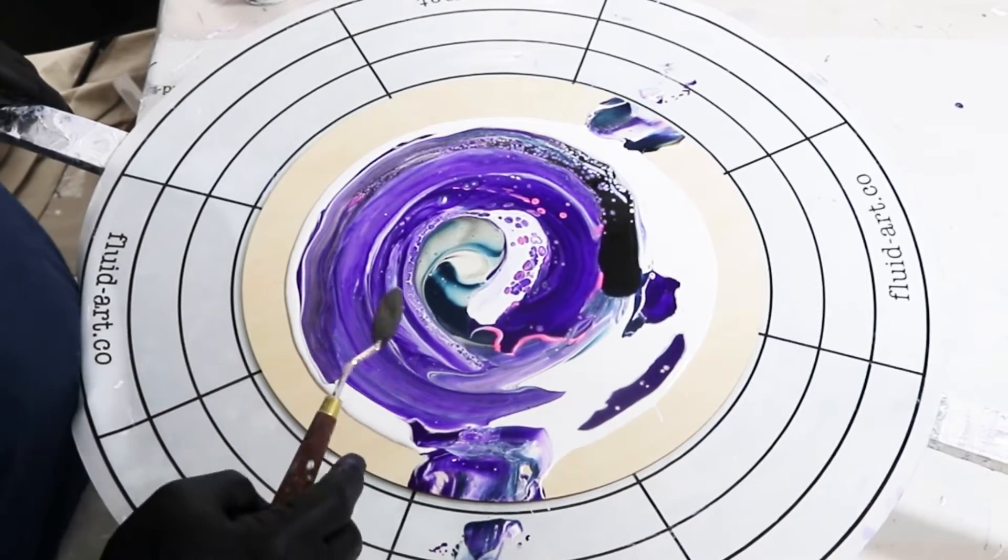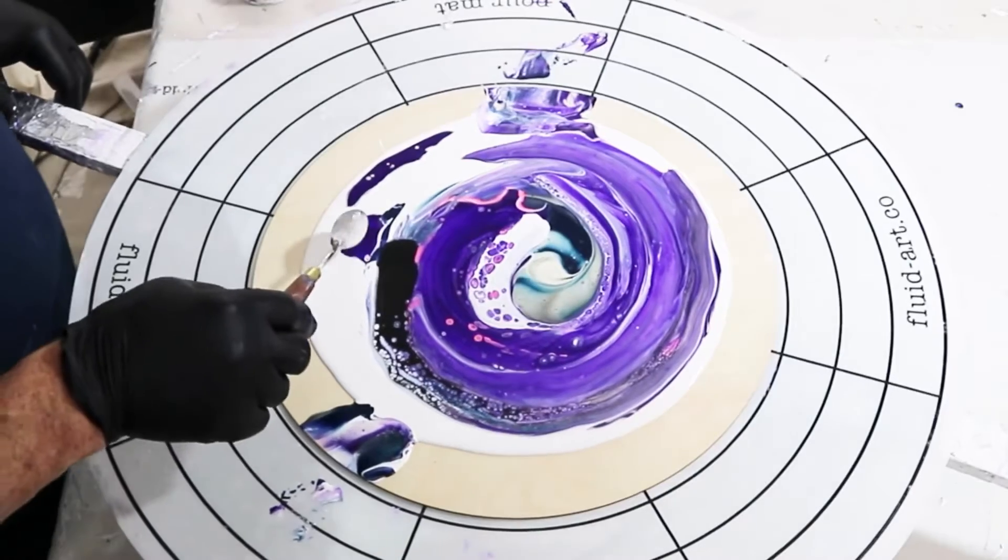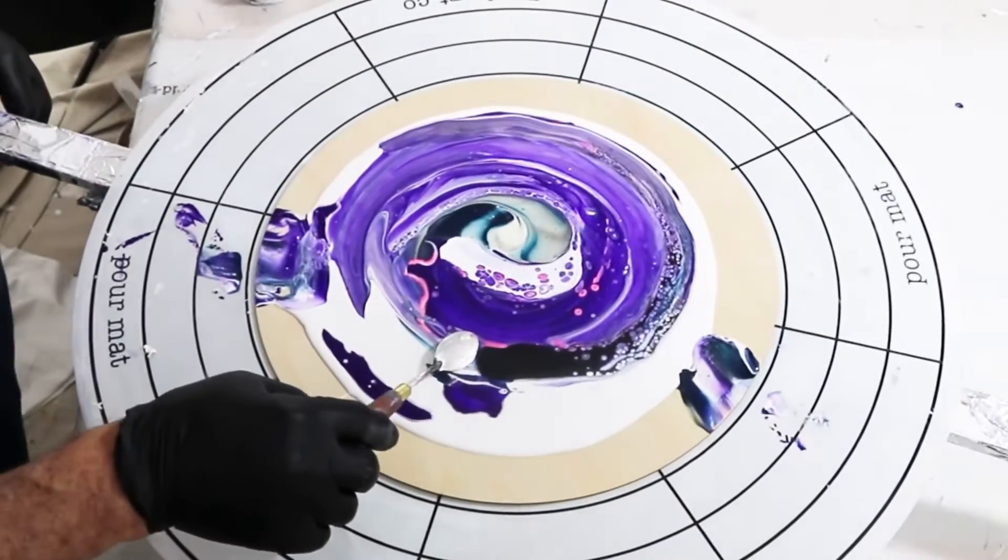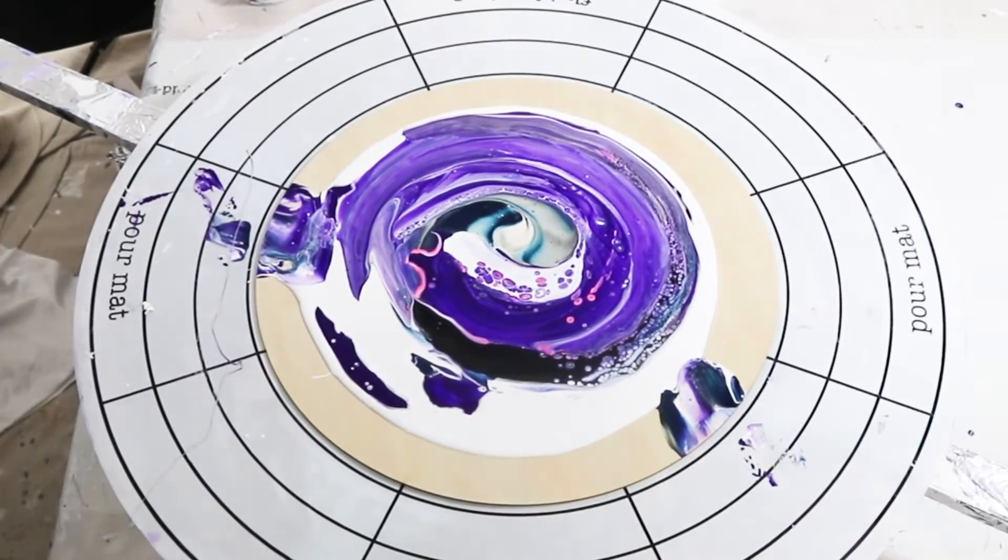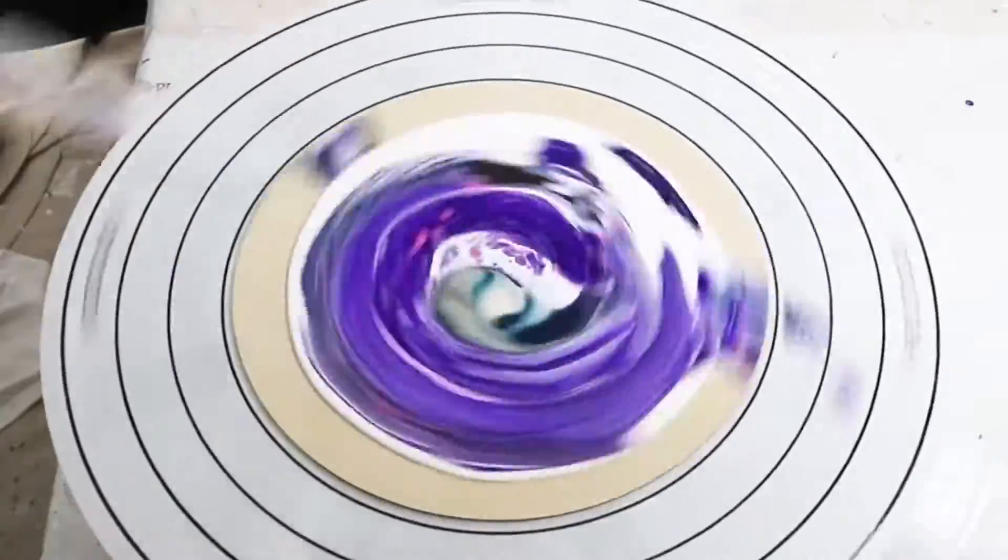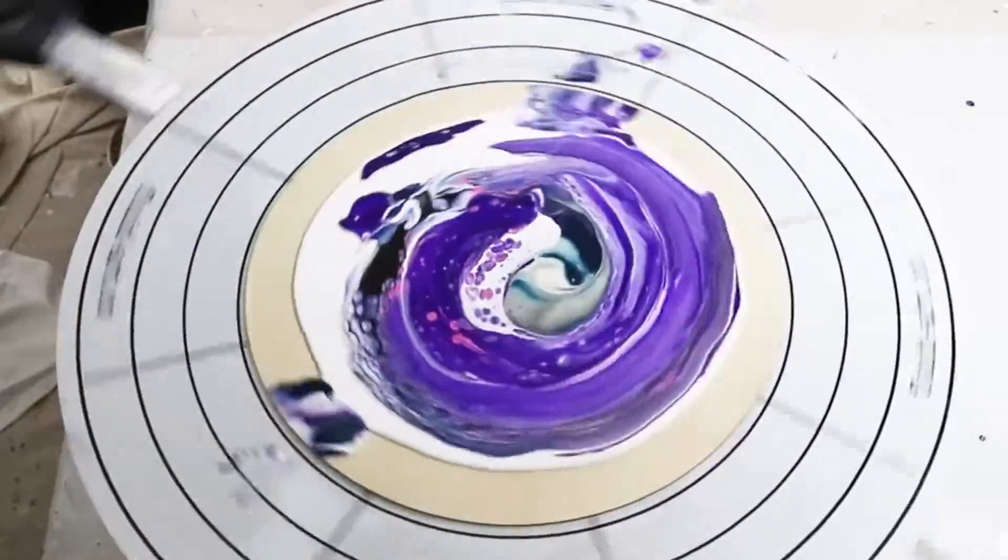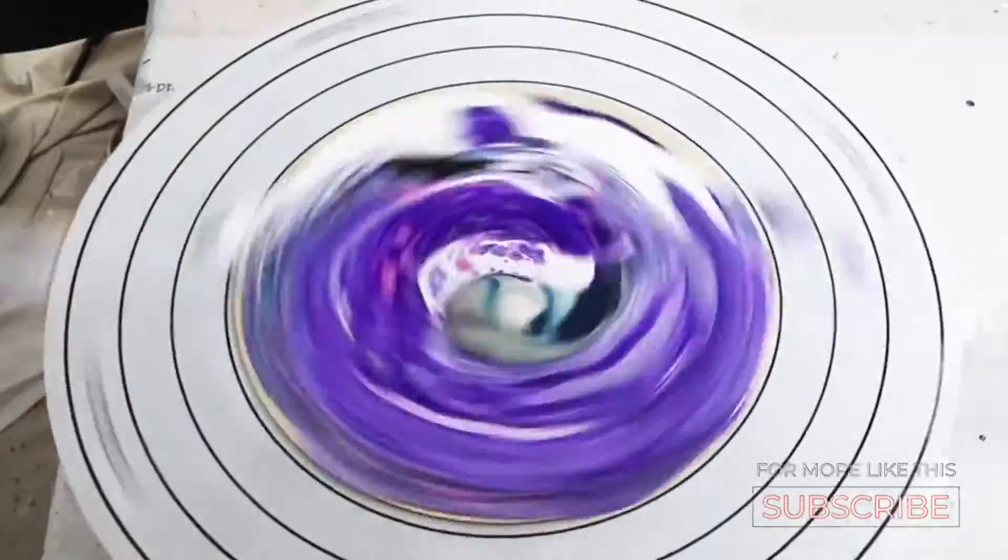You can see the cells are forming nicely there. A little bit of scoop and drag to spread this out, see if I can create some more interest. Starting to spin now. I do a lot of spinning with this one—you're not going to see all of the spinning, but you'll get a good taste of it.